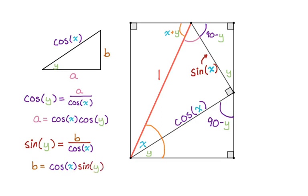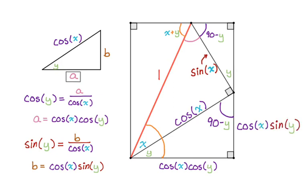Now I want to put these in the figure. A is adjacent to y, so it's actually the bottom edge of our rectangle — that's cosine x cosine y. B is the other side of that triangle, so cosine x sine y. Now we're going to move to the top right triangle and deal with that. It has a hypotenuse of sine of x and there's an angle y.